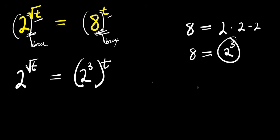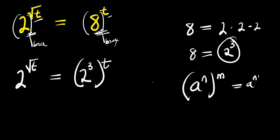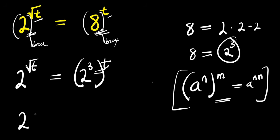If you consider this identity: a to the power of n, to the power of m, equals a to the power of n times m. We are going to multiply this exponent, so you have 2 to the power of root t equals 2 to the power of 3t, because 3 times t is 3t.